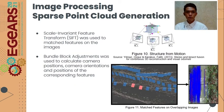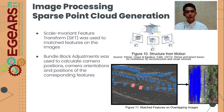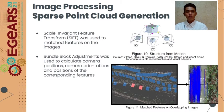For sparse point cloud generation, geo-referencing was conducted using the ground control points to position the 3D model in relation to the real world. Scale-Invariant Feature Transform was used to match features on the images, and bundle block adjustment was used to calculate the camera positions, camera orientations, and position of the corresponding tie points.